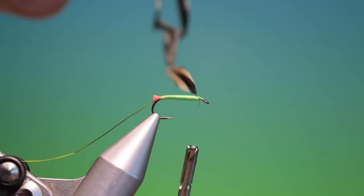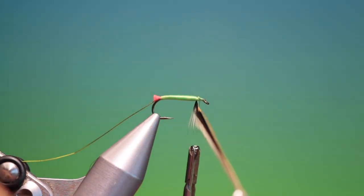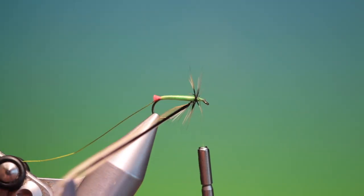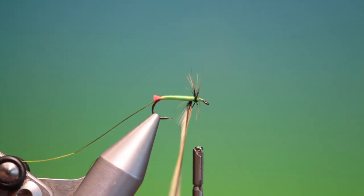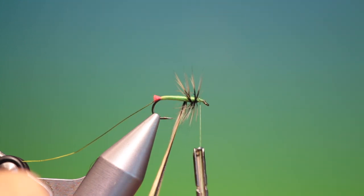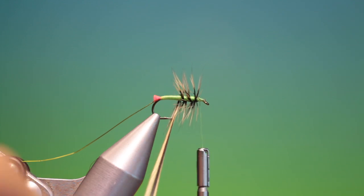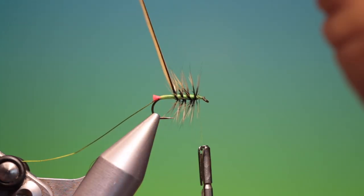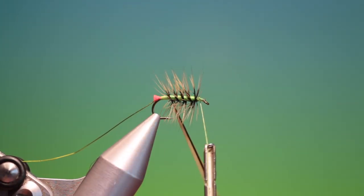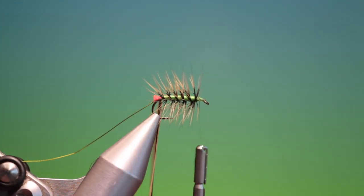I've chosen this badger hackle in a little bit shorter size, smaller size than for size 12 hook. I'll just go back. Open spiral. Palmer hackle. I'll end it there.